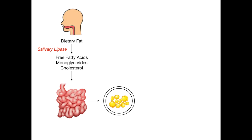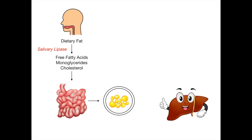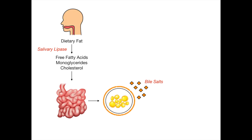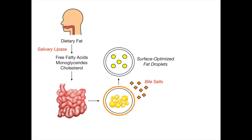Once you have your fat globules, you're going to pass by the liver. The liver has a duct that goes straight to the small intestine. The liver is going to secrete something called bile salts. Once the bile salts are secreted, they're going to act on the fat globules. Bile salts get released from the liver, come to the intestinal lumen through the duct, and act on the fat globules. When they act on the fat globules, they're going to further break them down into more optimized surface area. The bile salts act on the fat globules and convert them into surface-optimized fat droplets — smaller and more optimized for further breakdown.